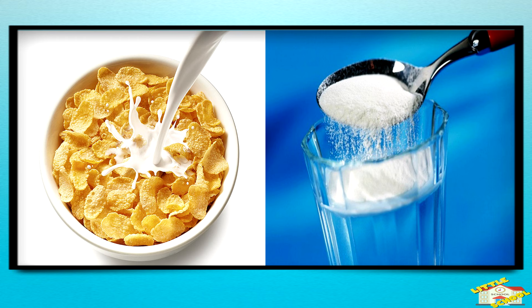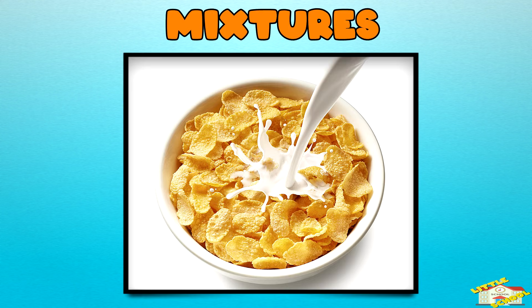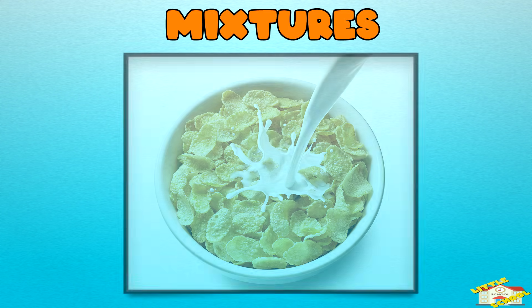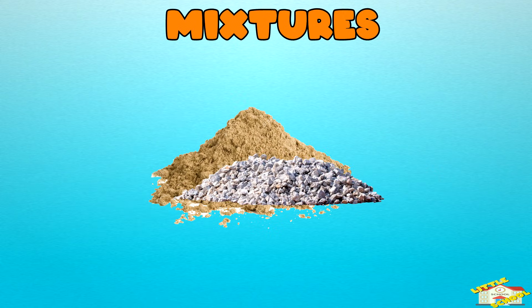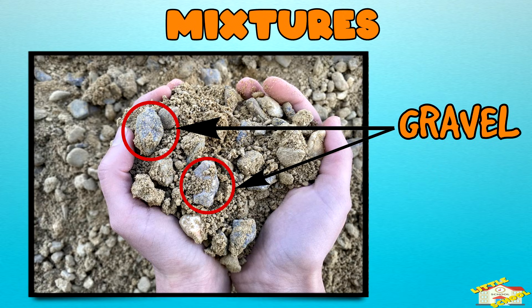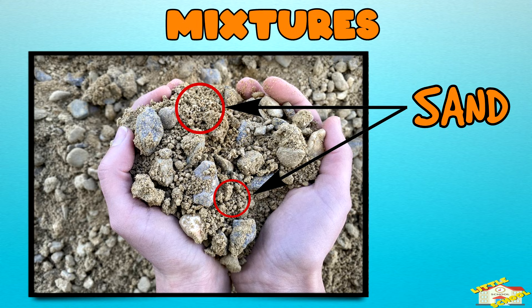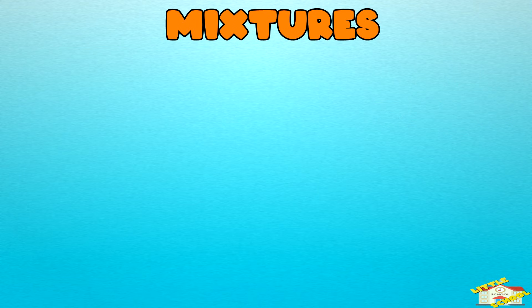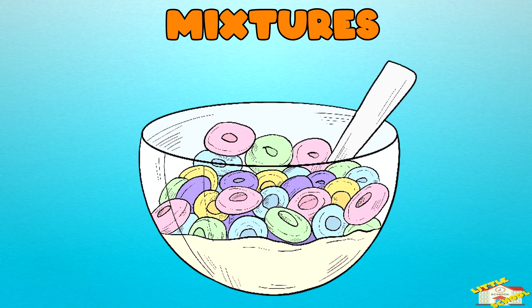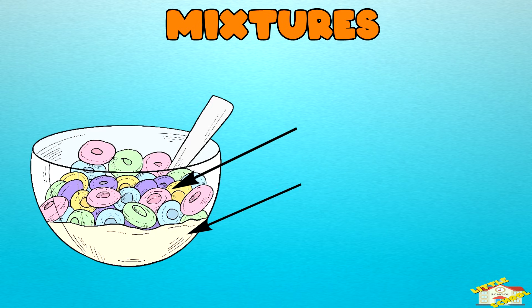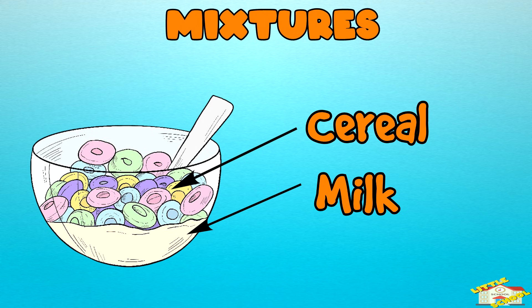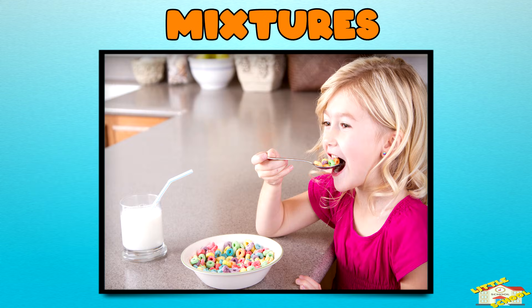Mixtures and solutions are both ways to combine things, but they work a little differently. A mixture is when you take two or more things and put them together, but you can still see and separate each part. Imagine you have a bowl of cereal and milk — that's a mixture. You can see the cereal and the milk separately, and you could scoop out the cereal if you wanted to.